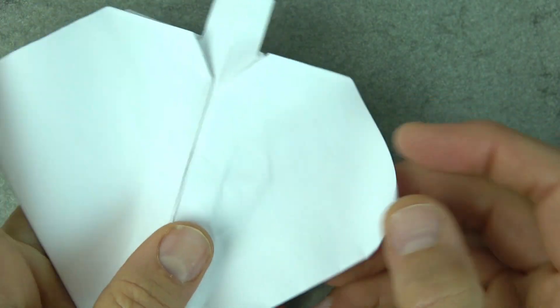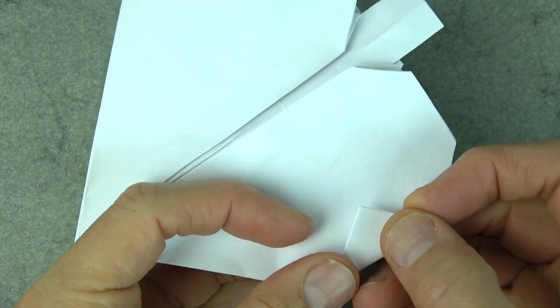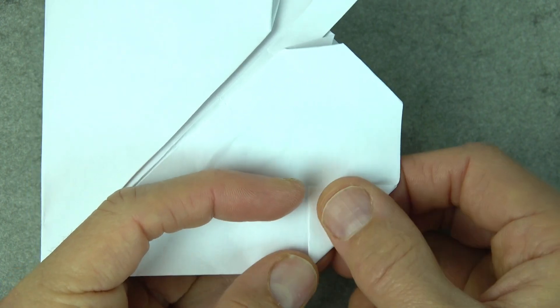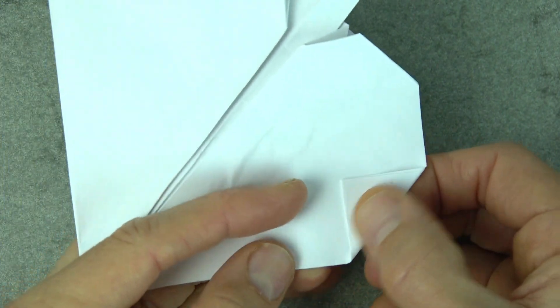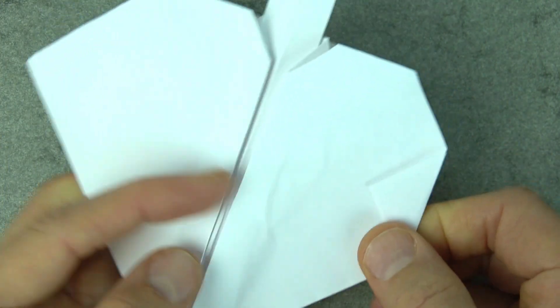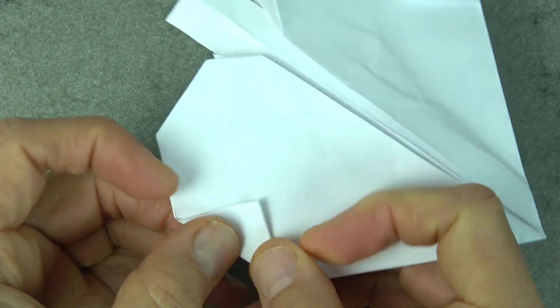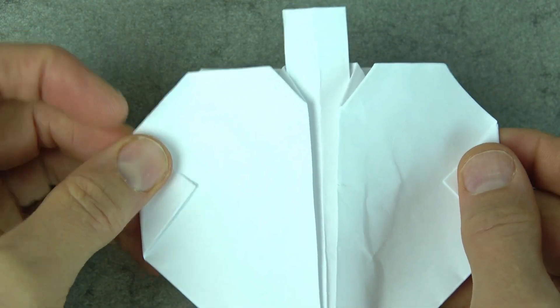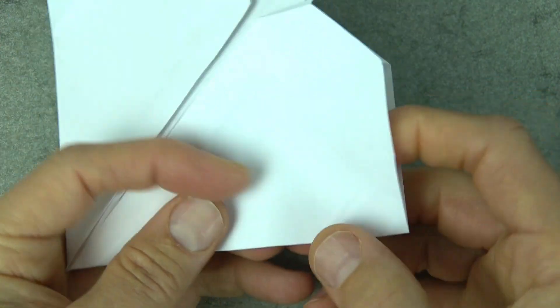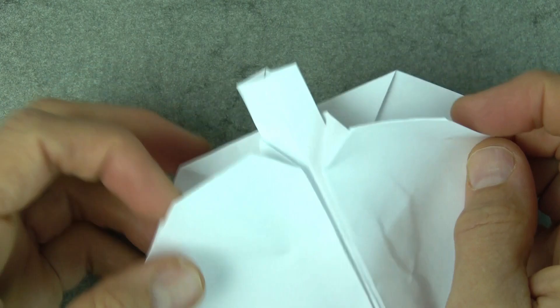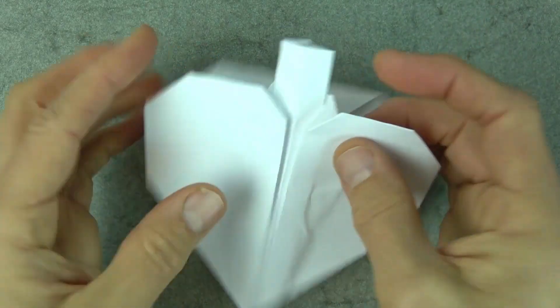And now we're going to reverse fold these two corners. Let's first just fold them like this. And try to make this length about equal to this length. And same on the side. And unfold, and reverse them. All right. So there is the heart.